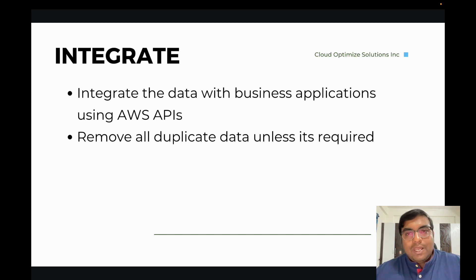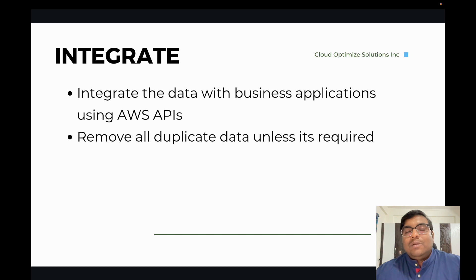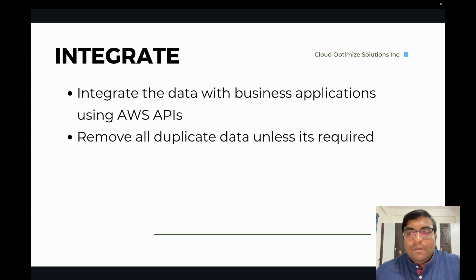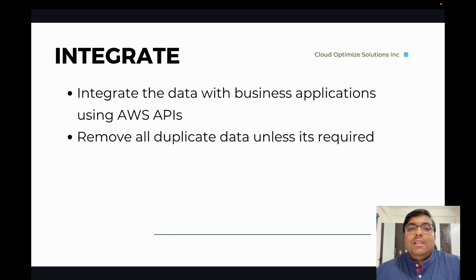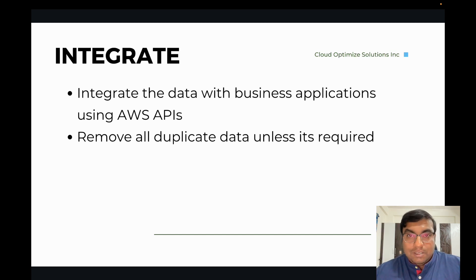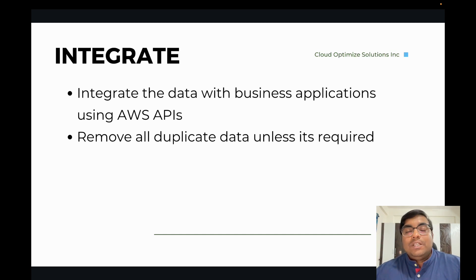Rather than just jumping in to create Transfer Family servers and trying to do it — that's not the right approach. You need a process, and this four-step process will guarantee success. It doesn't matter how bad or unstructured your data is, or where it is located — if you follow this four-step process, your data will be securely uploaded to AWS and you can manage it really well in the future. I hope this is useful. Please share it so others can benefit, and thanks for watching.